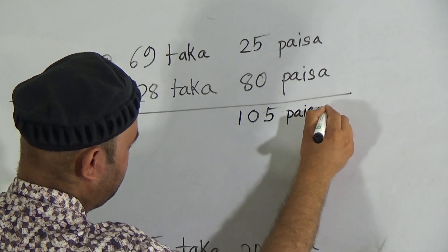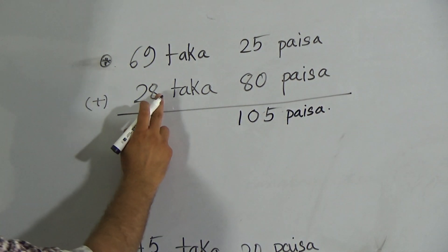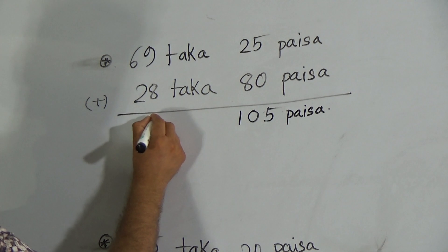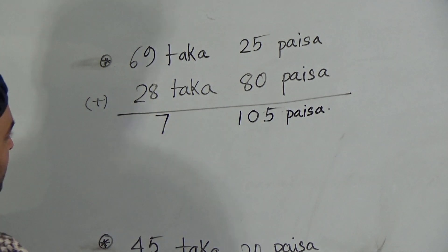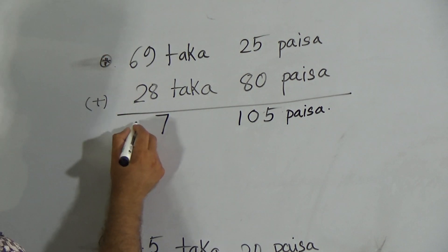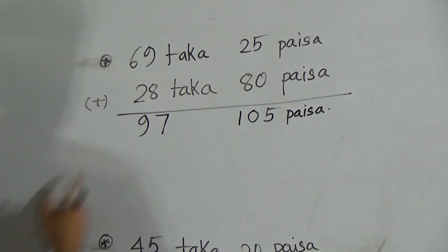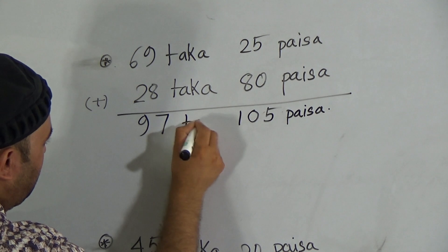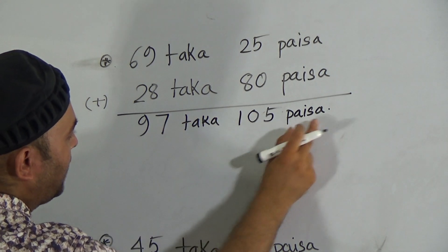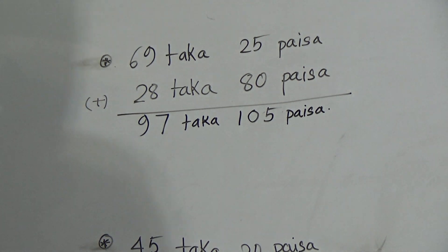Now here 8 and 9, 8, 9, 10, 11, 12, 13, 14, 15, 16, 17. So here it will be 7 and carry is 1. 2 and 1 is 3, 6 and 3 will be 9. So here it will be 97 taka and 105 paisa.